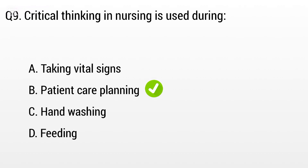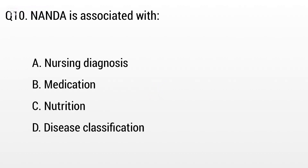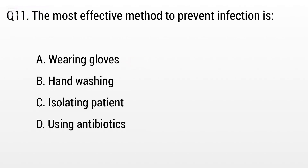Question 10: NANDA is associated with — option A: Nursing diagnosis, B: Medication, C: Nutrition, D: Disease classification. The right answer is option A: Nursing diagnosis. Question 11: The most effective method to prevent infection is? The right answer is option B: Hand washing.